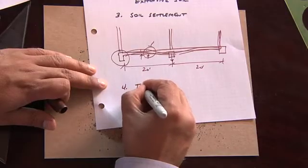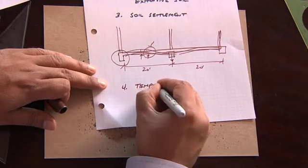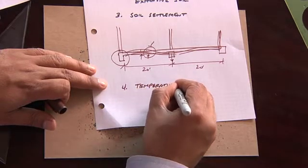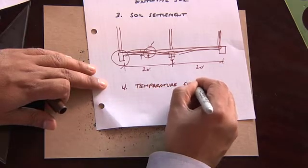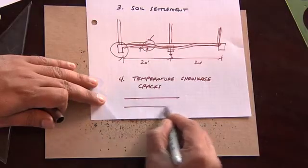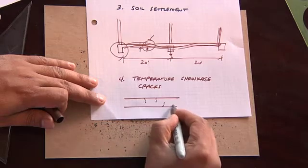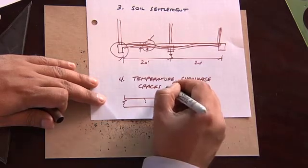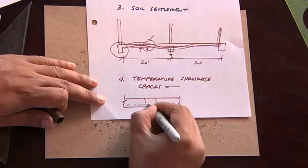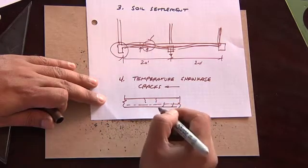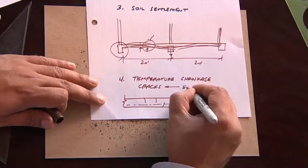Another thing that comes up with slab-on-grade systems is what we call temperature shrinkage cracks. And so, what happens there is the slab will exhibit some normal cracking, but if it does not have the adequate steel, if the steel is not there, this could become quite excessive.